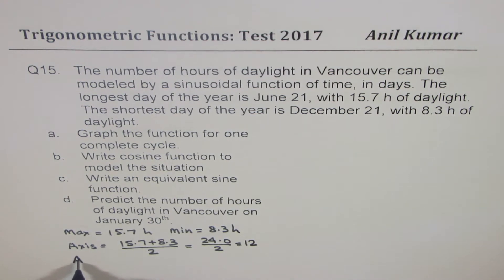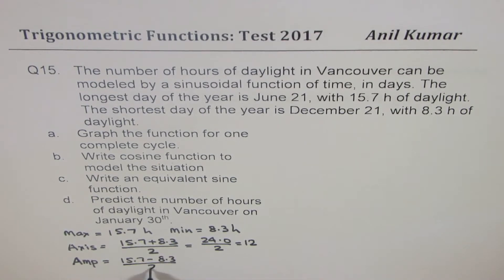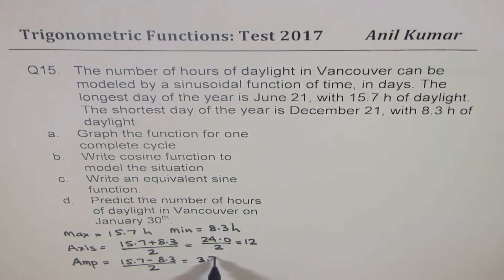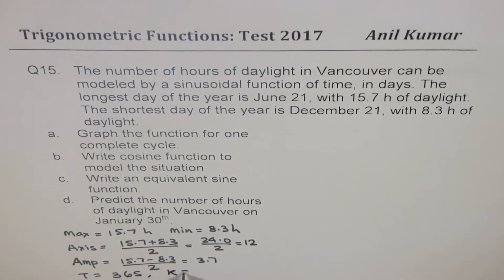Amplitude A: we find the difference and divide by 2, which is 15.7 minus 8.3 divided by 2. Another way is to take the maximum minus the average: 15.7 minus 12 gives us 3.7, which is the amplitude. The time period is 365 days, which gives us the k value as 2π divided by 365.